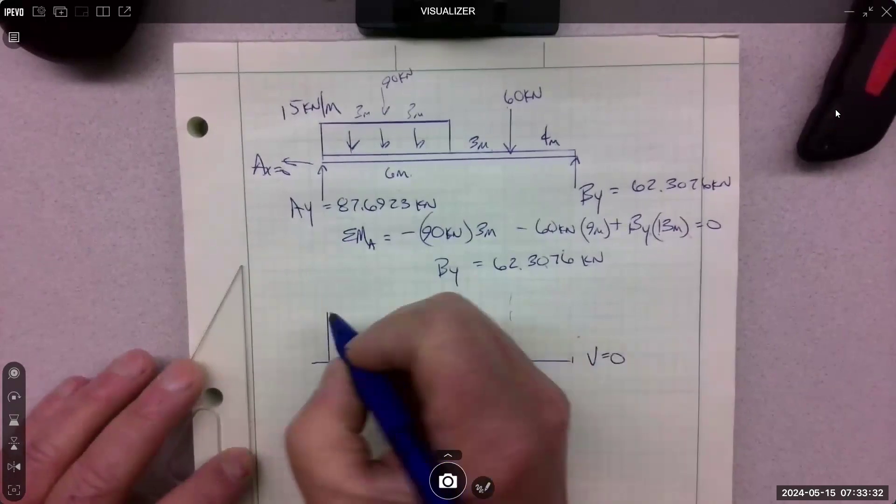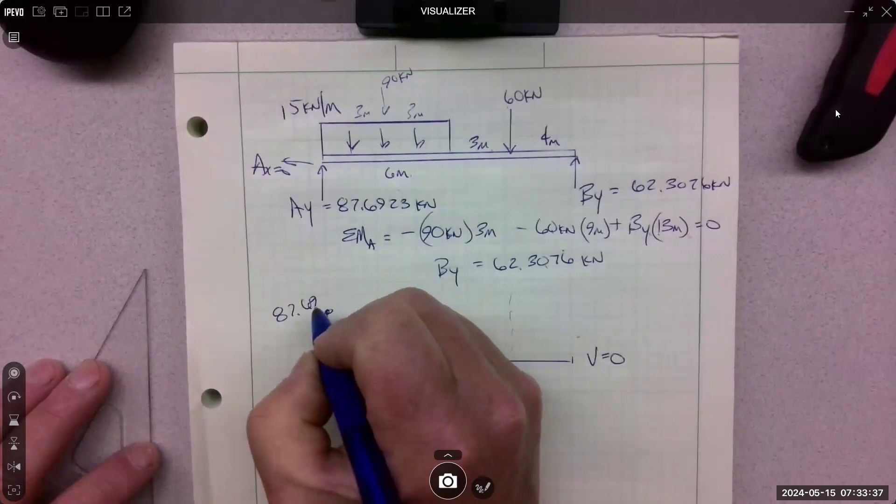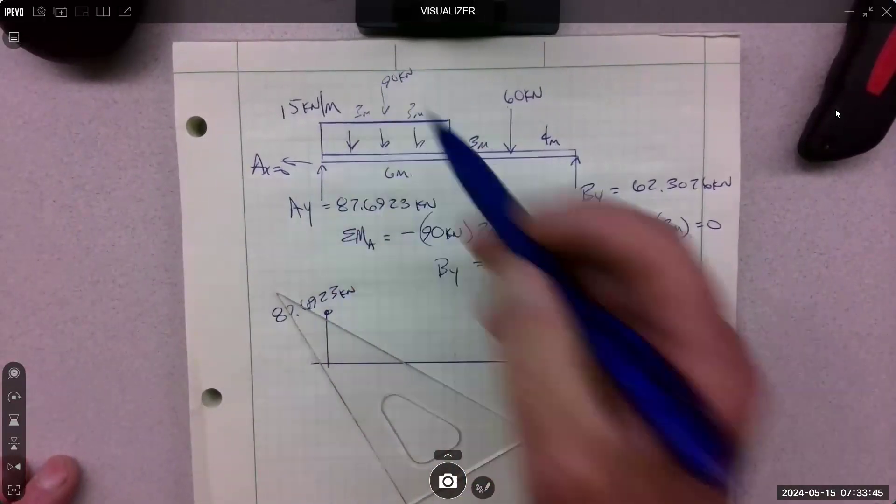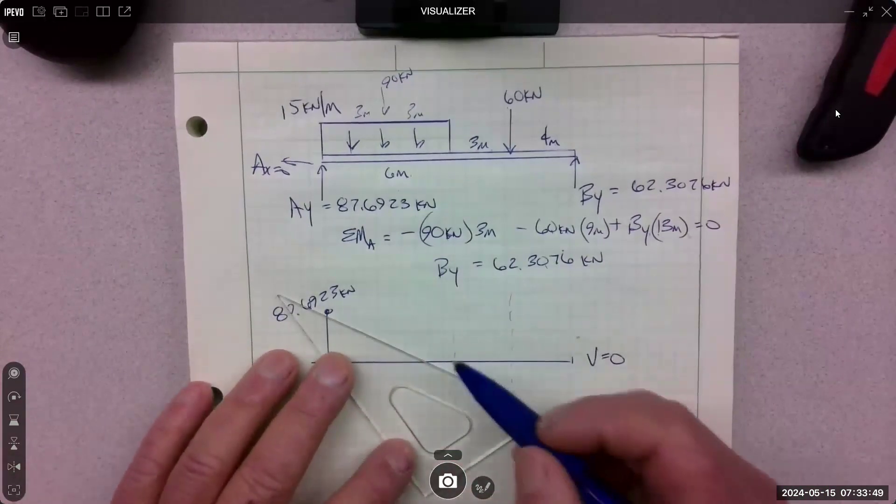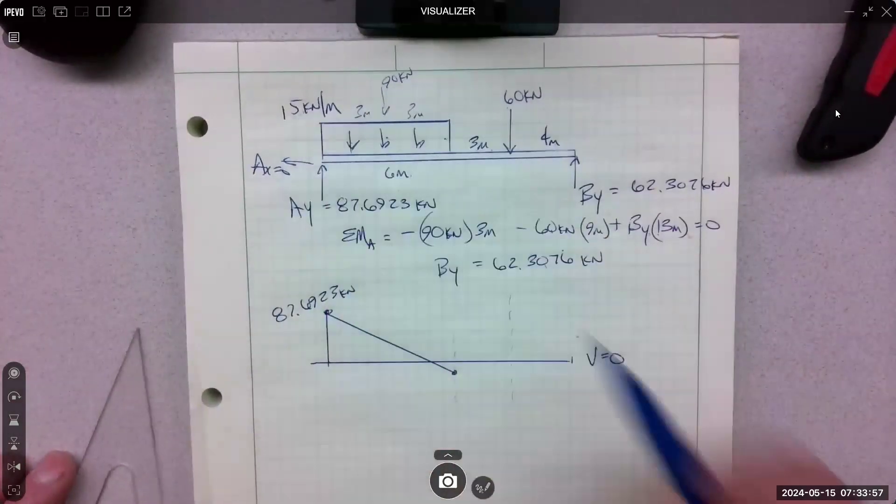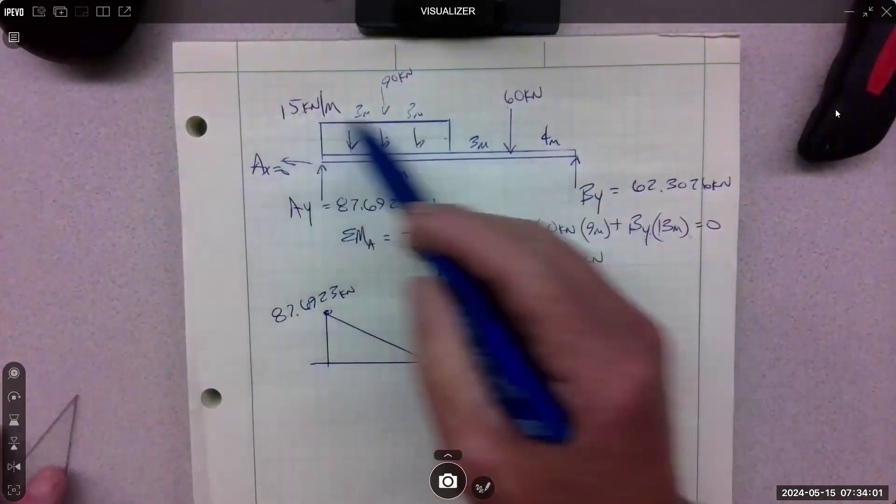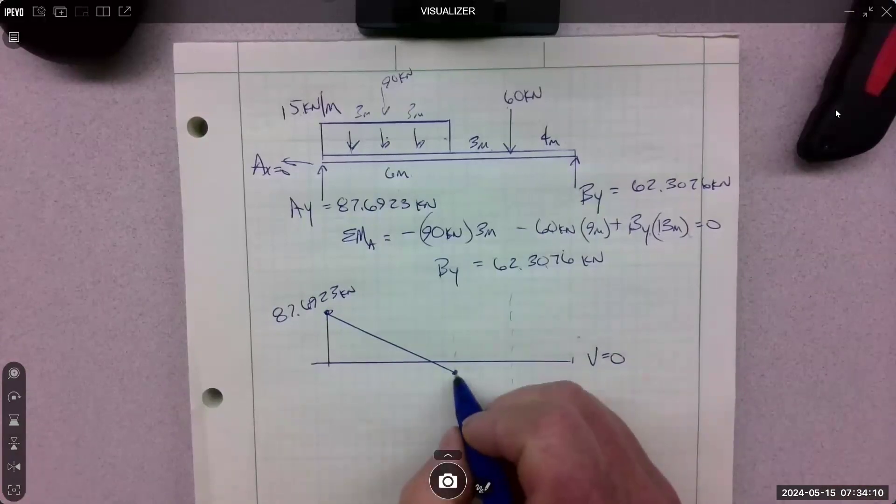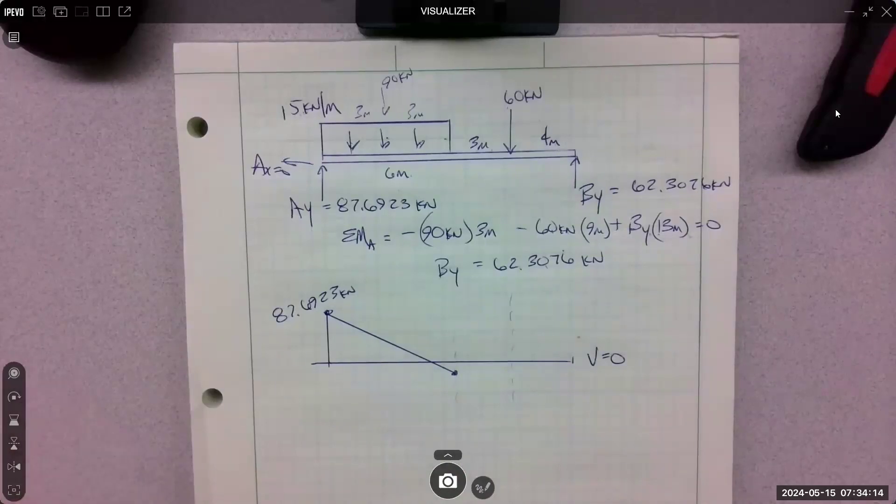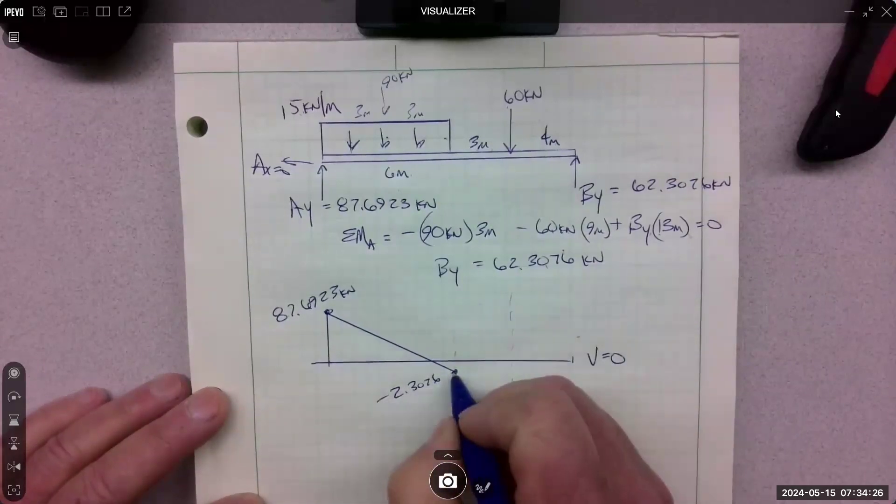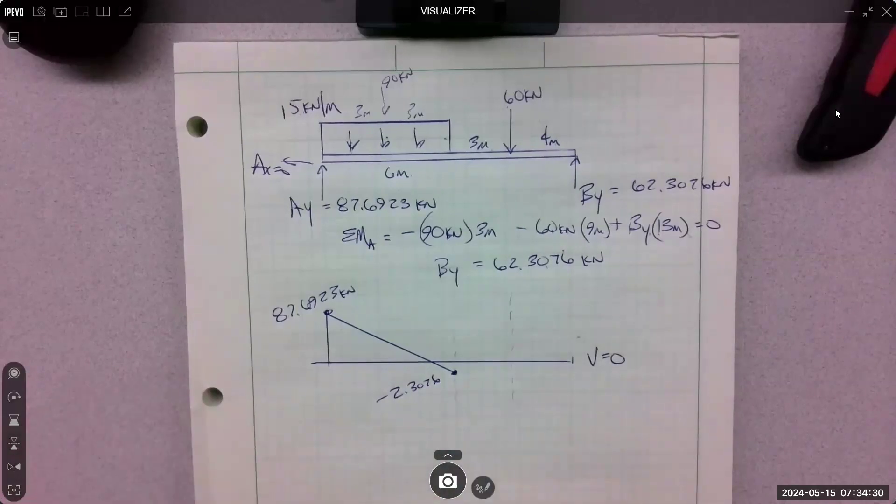So I'm going to go up by 87.6923 kilonewtons. And then it comes down at 15. So it's going to come down a total of 90. So it's just barely going to cross. So I'm going to put it like right there. Every meter comes down 15. So it is a straight one. Horizontal will produce a straight line slope, which will produce some kind of curve down here in the moment. So this comes down, drops 90. Looks like it's down to 2.307. Into the negative region.